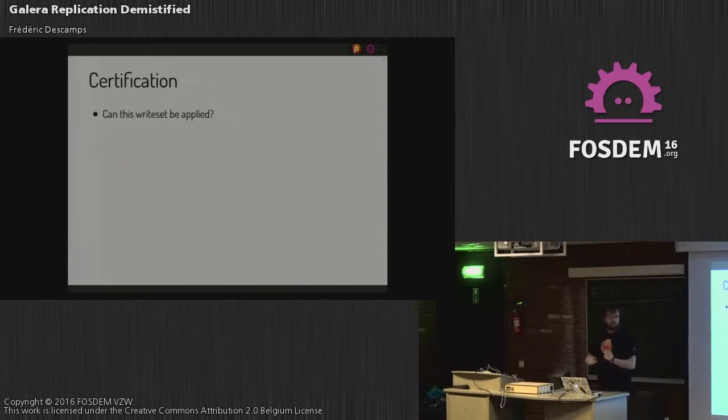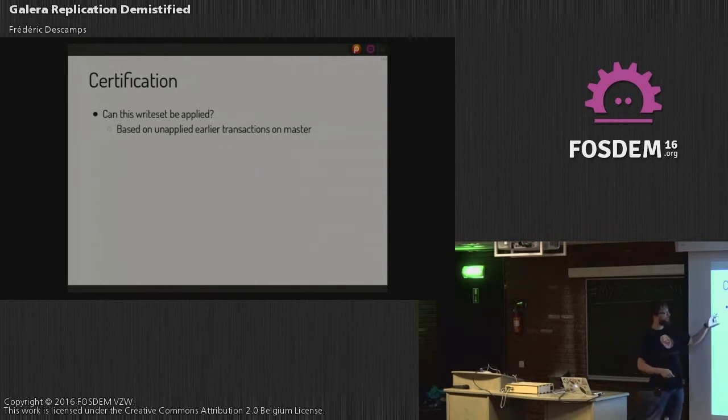What is then the certification? I go a bit fast, we can discuss later. The certification is just answering this main question: can this write be applied on the machine I am trying to do the certification? If I can apply, so if there is no conflict, then yes, certification passes. If there is something that blocks me to write that data on the node, then certification fails. I need to check the data, and also based on the unapplied earlier transaction on the master. It could happen, when I do the certification, that there are some still transactions that are in the queue that are not yet applied, and I need to verify those too.